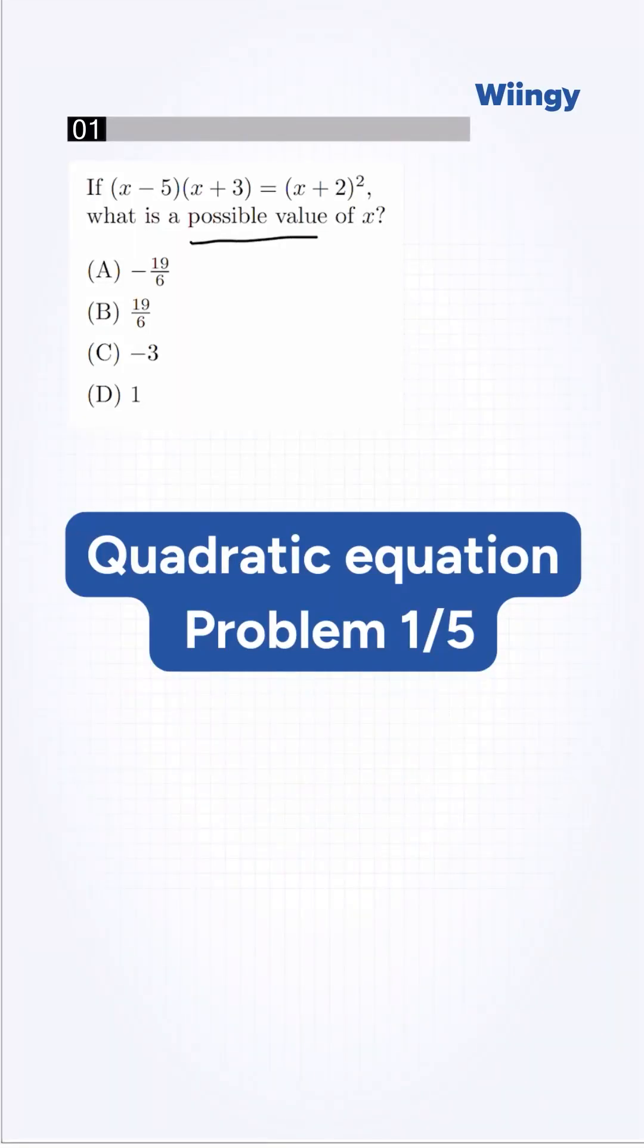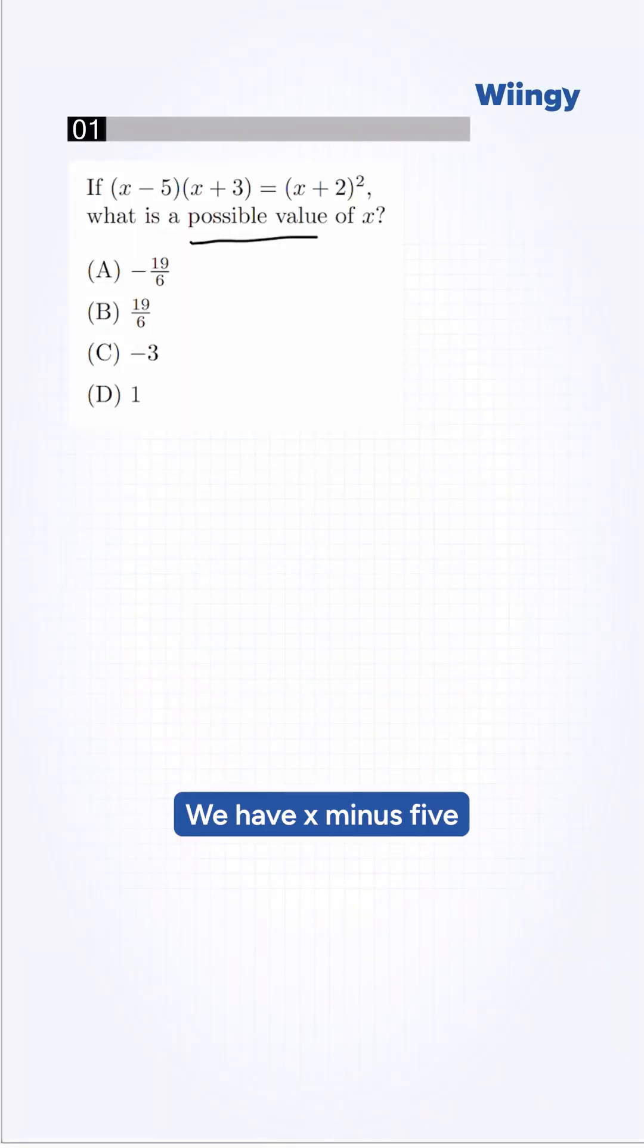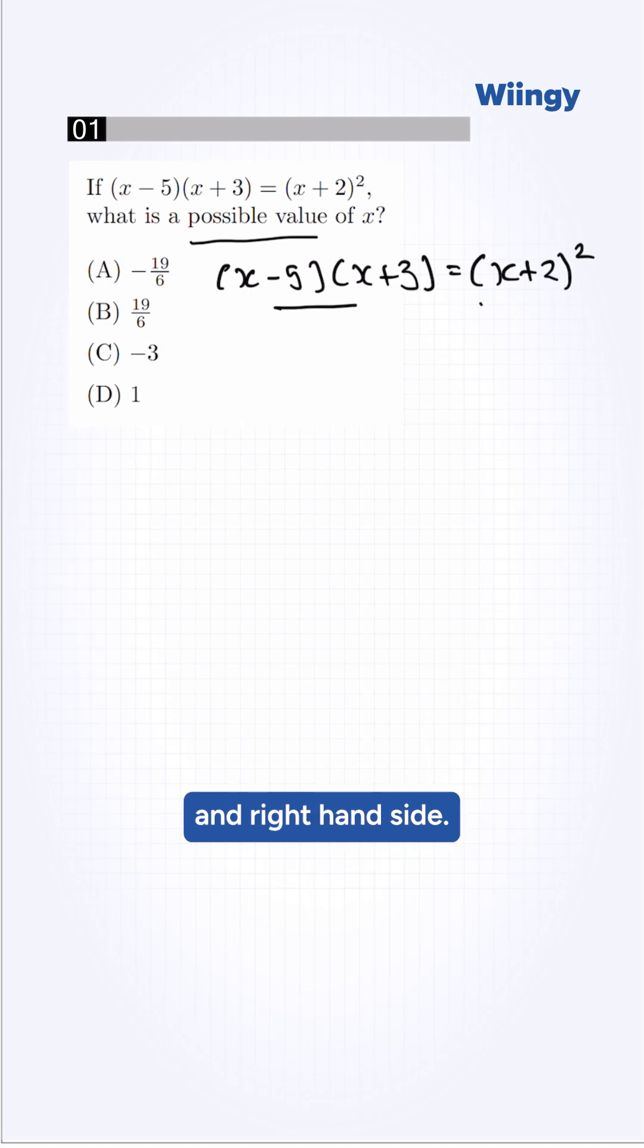Let's test your algebra skills with this SAT math question. We have x minus 5 into x plus 3 is equal to x plus 2 whole square. We use FOIL for left-hand side and right-hand side.